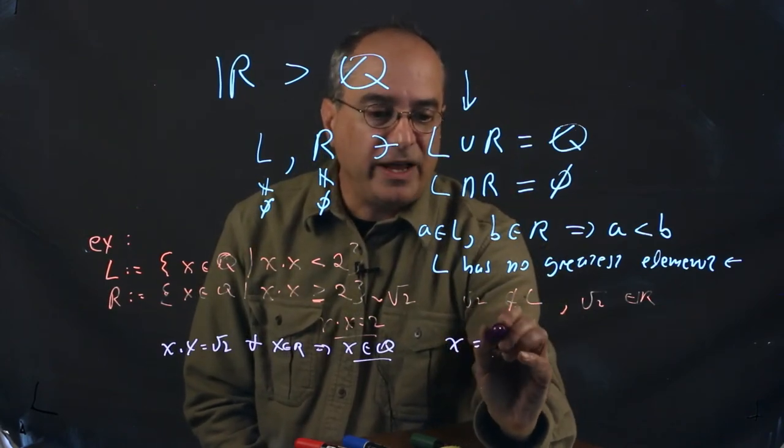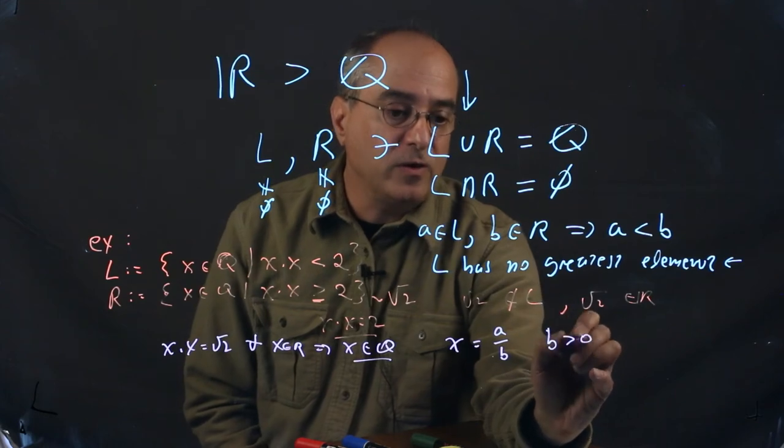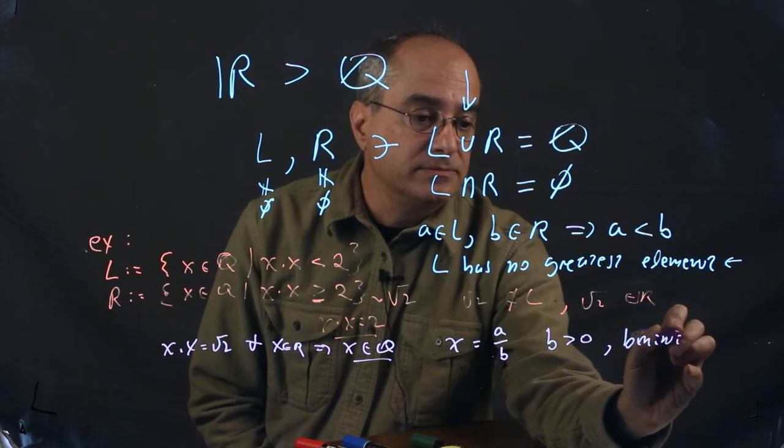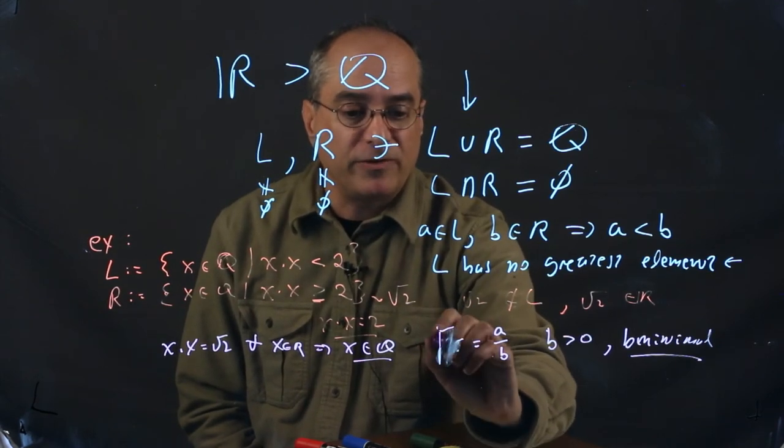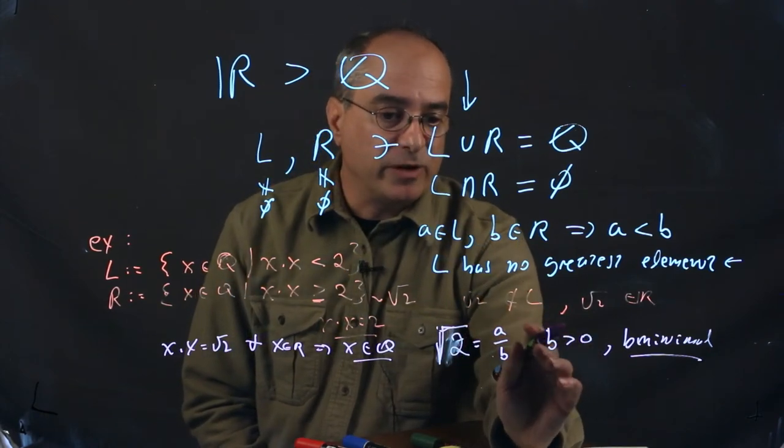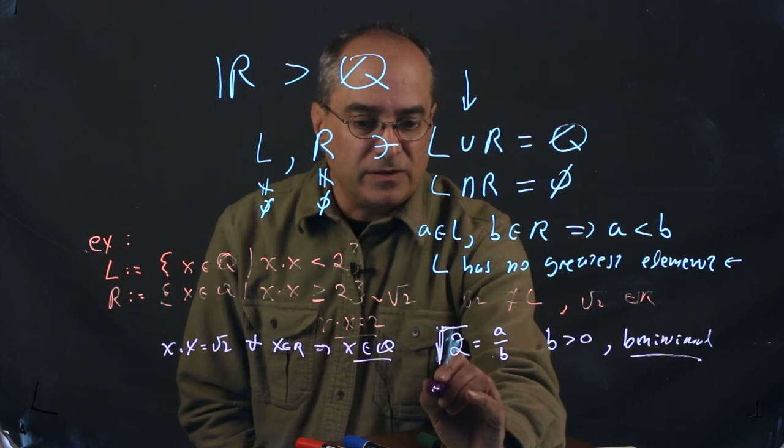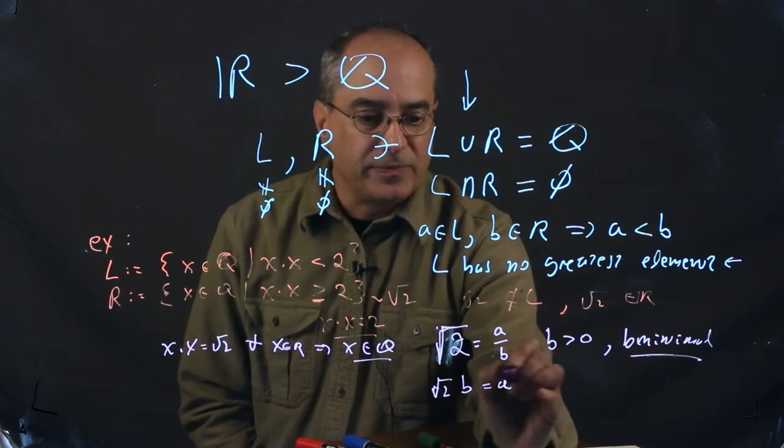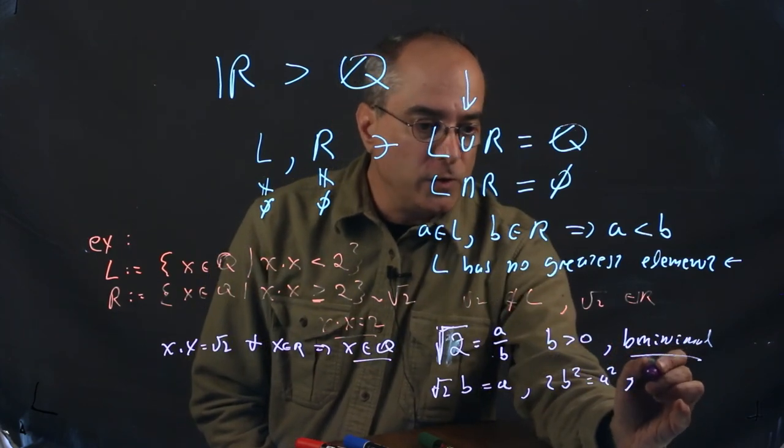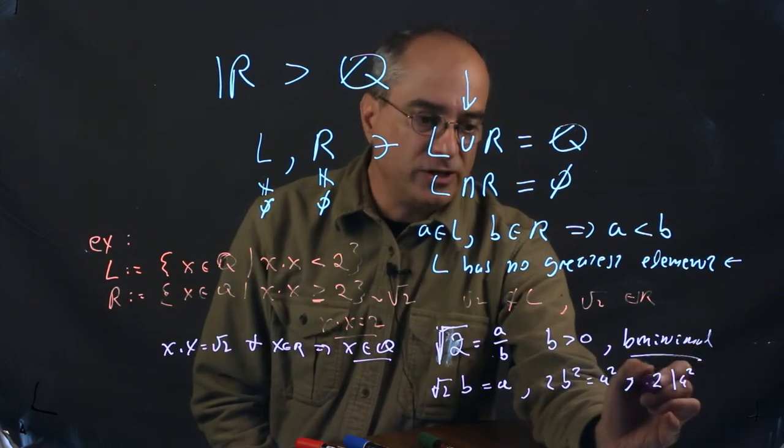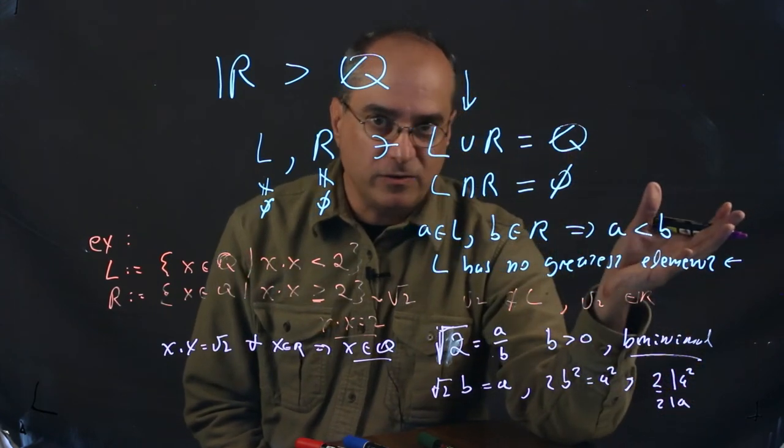This is how we're going to do the proof by contradiction. We're saying we assume we can write square root of 2 as A over B, A and B integers, B greater than 0, B minimal, such that obeys this. Well, then we get square root of 2 times B equals A, which in turn implies 2B squared equals A squared. This implies 2 divides into A squared, which in turn implies 2 divides into A, because 2 is a prime number. It's not the factor of any two nontrivial integers other than 1 and 2. So if 2 divides into A squared, 2 must divide into A. This is the trick, that 2 is picked to be a prime number.